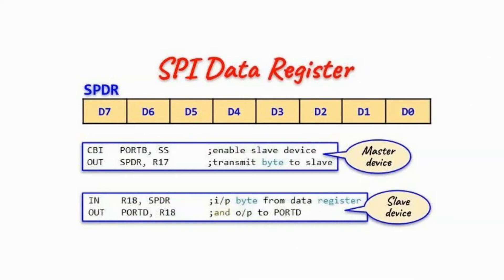The SPI of the ATmega328 has three programmable registers: the data register, the control register, and the status register.